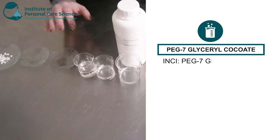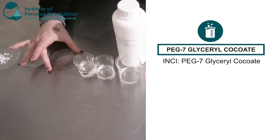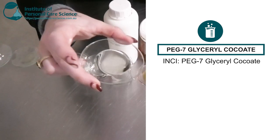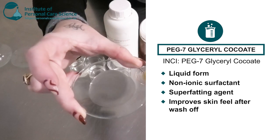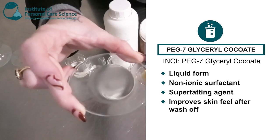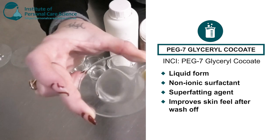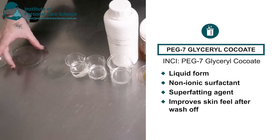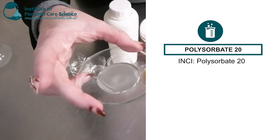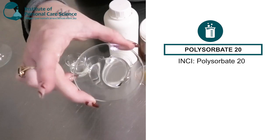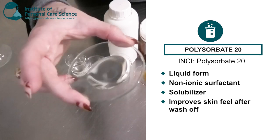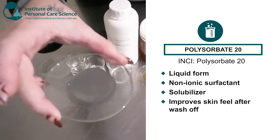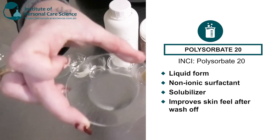Now next I have a couple of non-ionic surfactants here. So this next one here is the PEG7 glycerol cocoate. This is actually a superfading agent and it's non-ionic. So this is what improves the skin feel after wash off. The next non-ionic surfactant I have here is some polysorbate 20 and this is used as a solubilizer. So this is going to help easily disperse some oily materials in a water-based product.